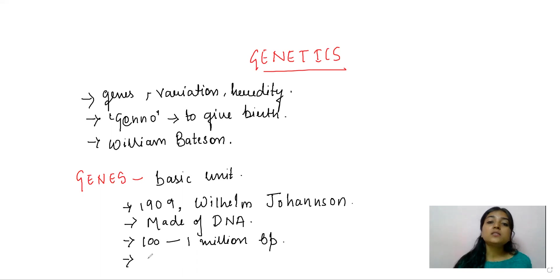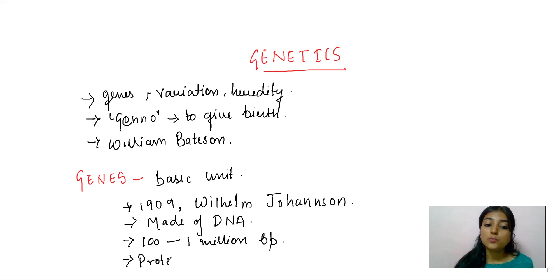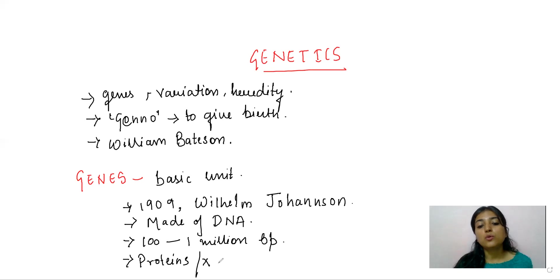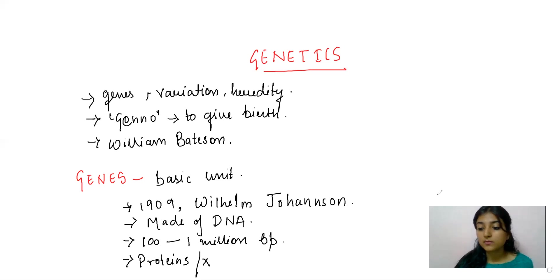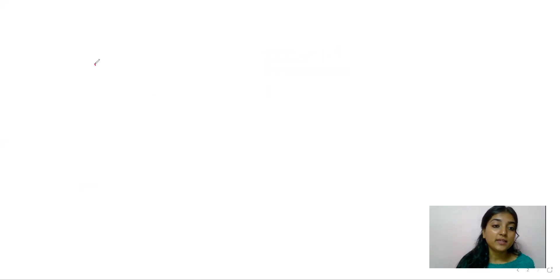There are some genes which are instructed to make molecules known as proteins, whereas some genes do not code for proteins. Next is genetic variation.